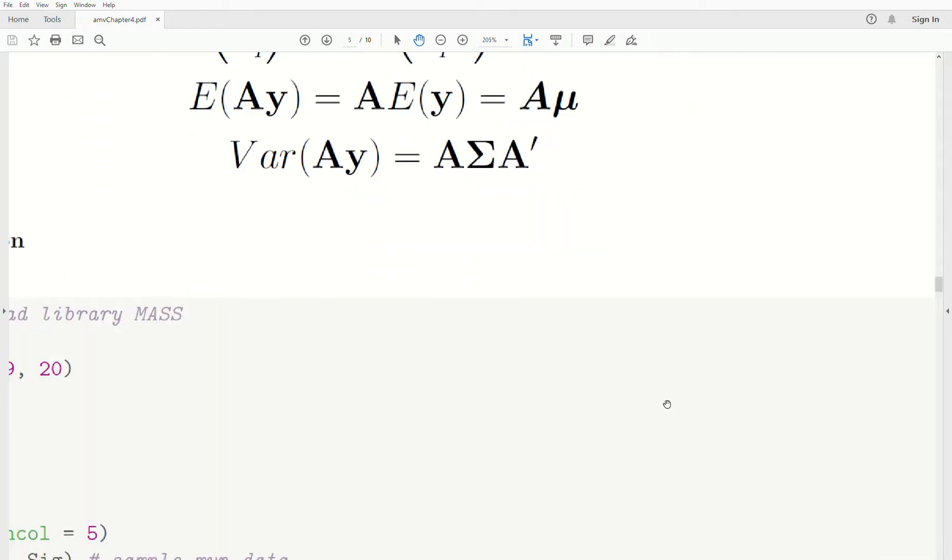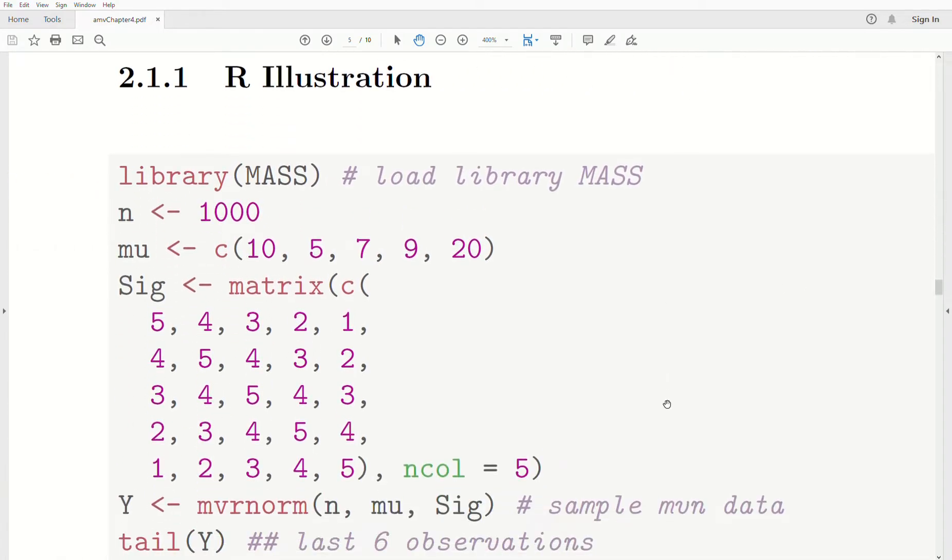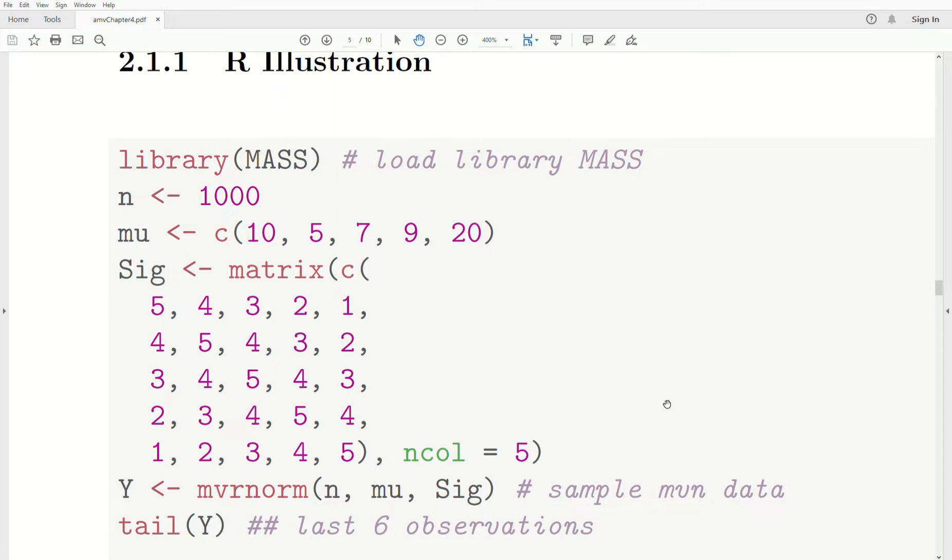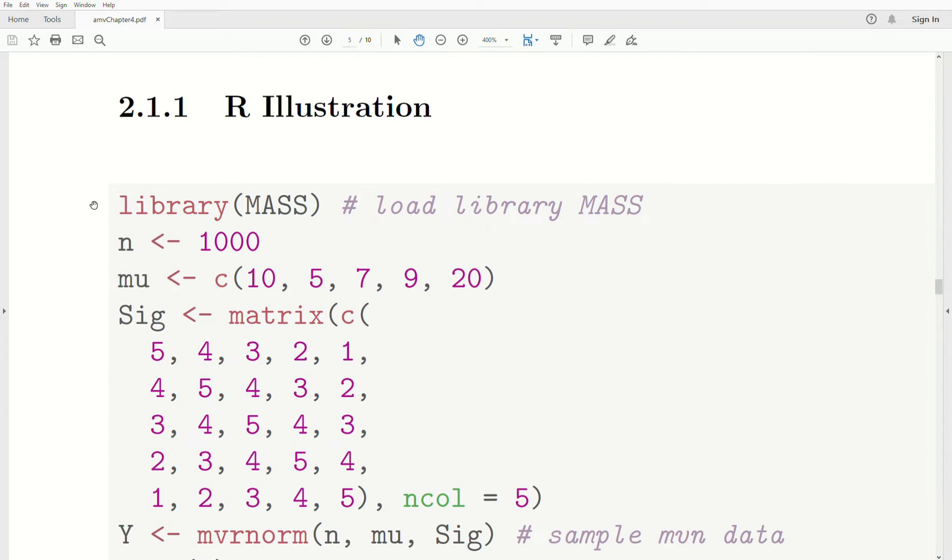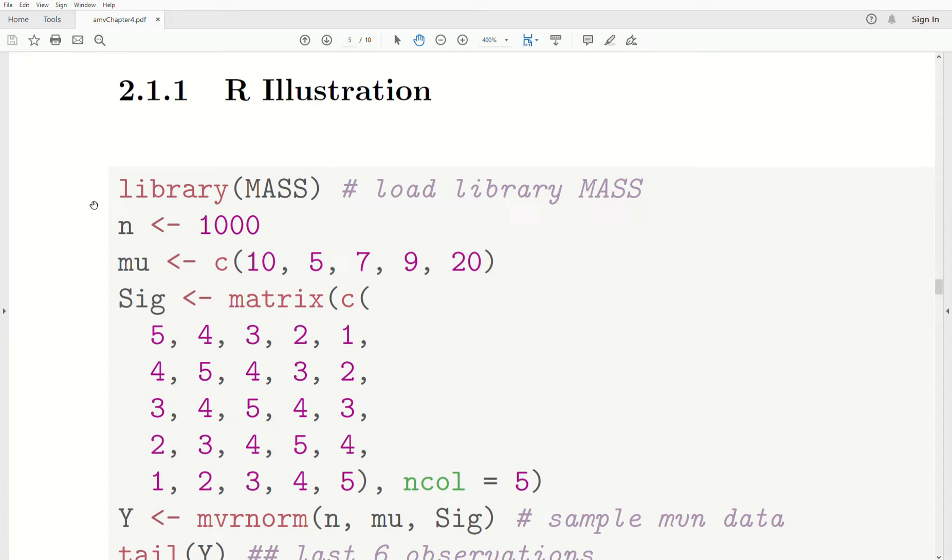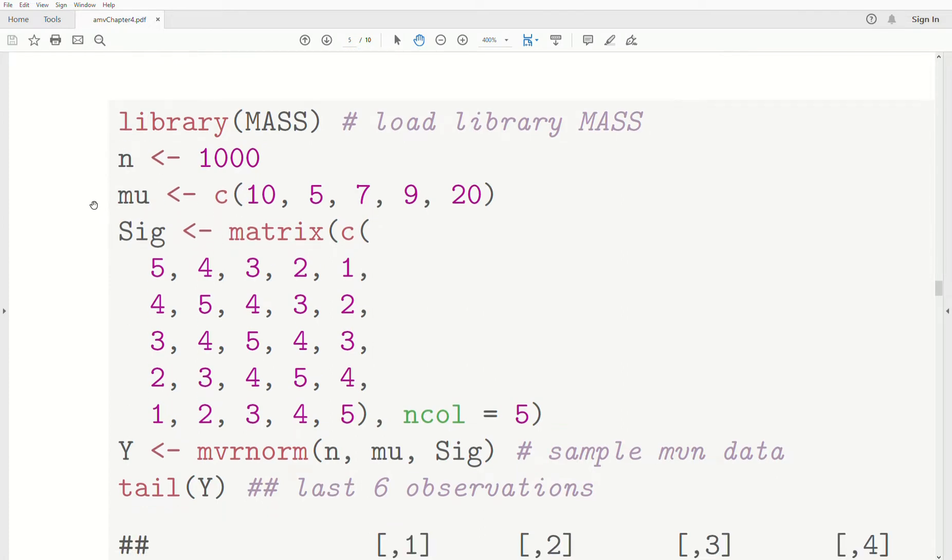Now as an R illustration, we need to load the library mass. You don't need to download the package mass because mass comes with every installation of R. So we want our sample size to be 1000. Now remember, let me go back. What we covered just a second ago were theoretical derivations, and now we're going to apply it to a sample. So the sample transformation should be very close to the theoretical, and the larger we increase our sample size, actually the closer they are. So we want a mean vector of 10, 5, 7, 9, and 20.